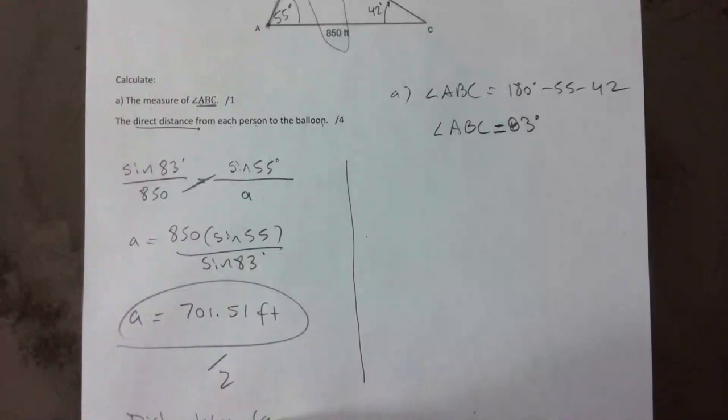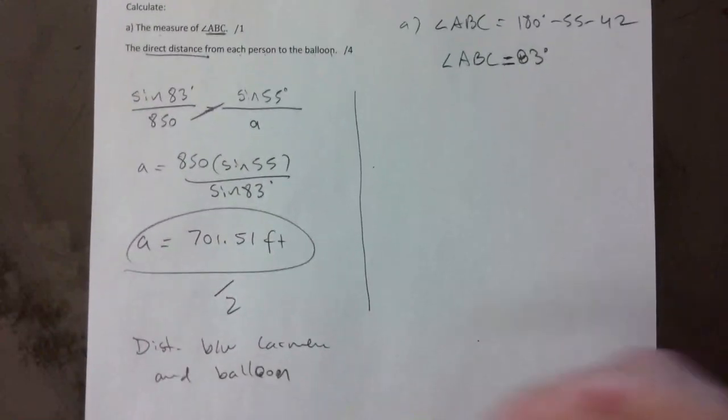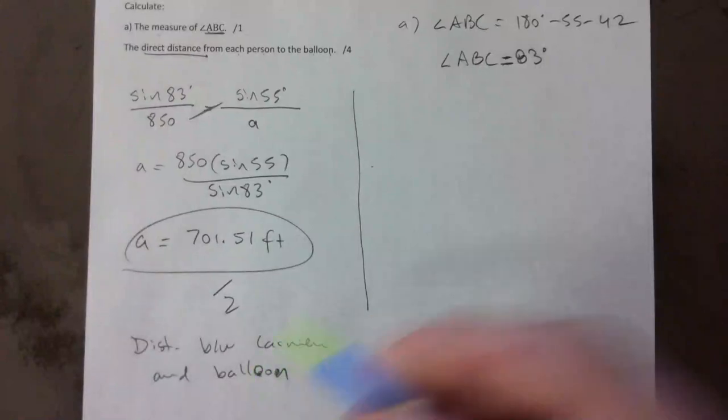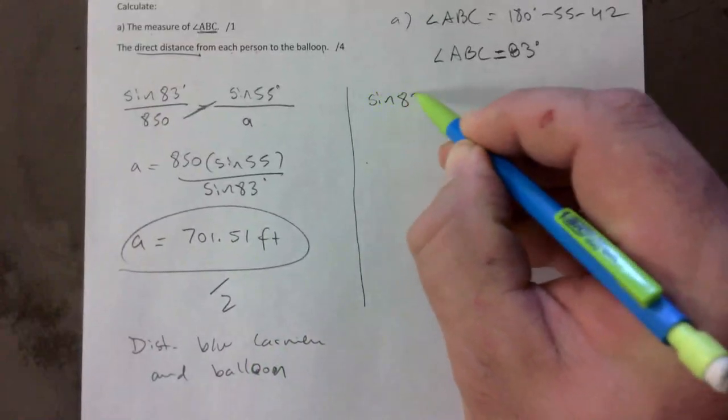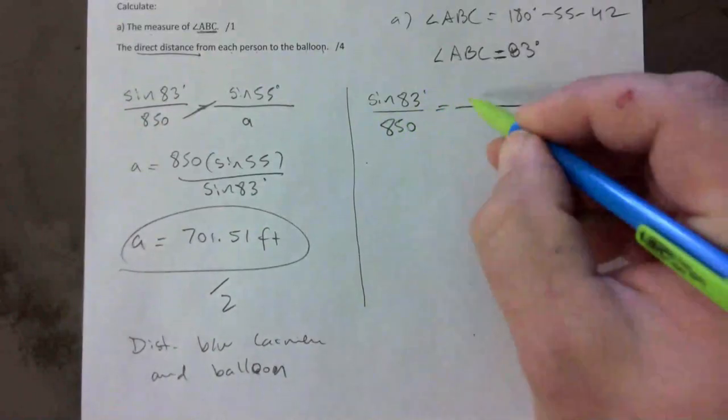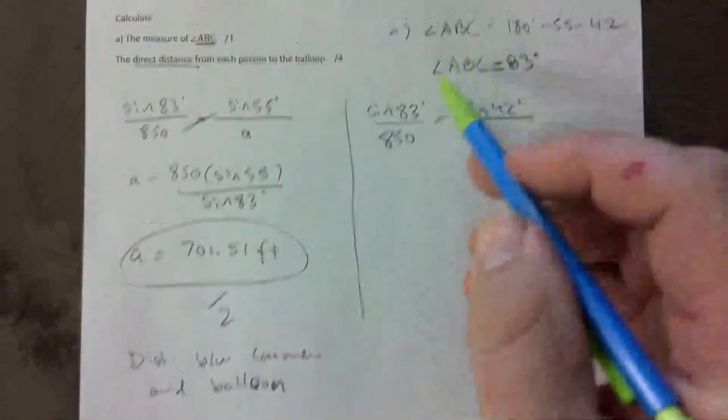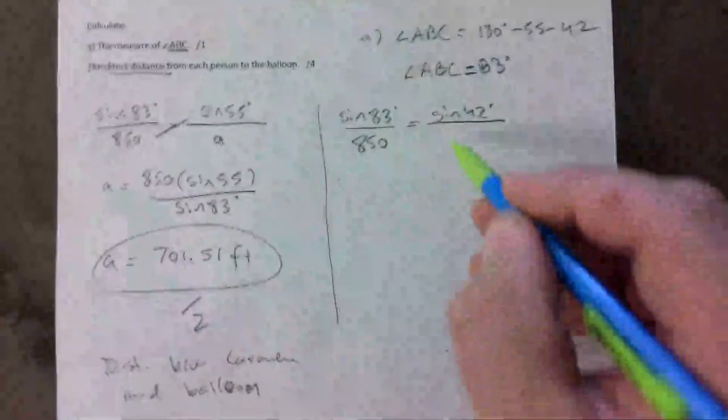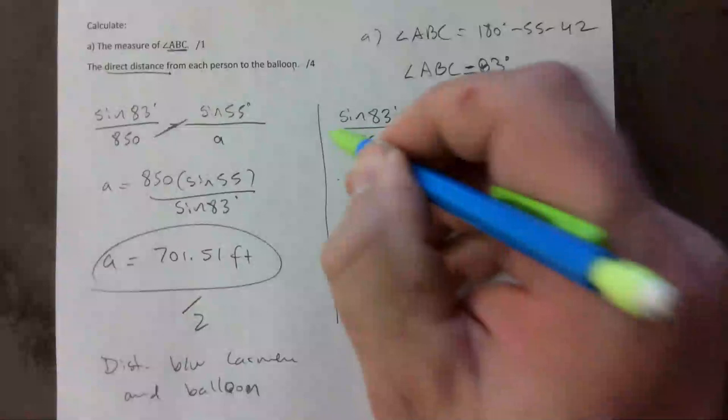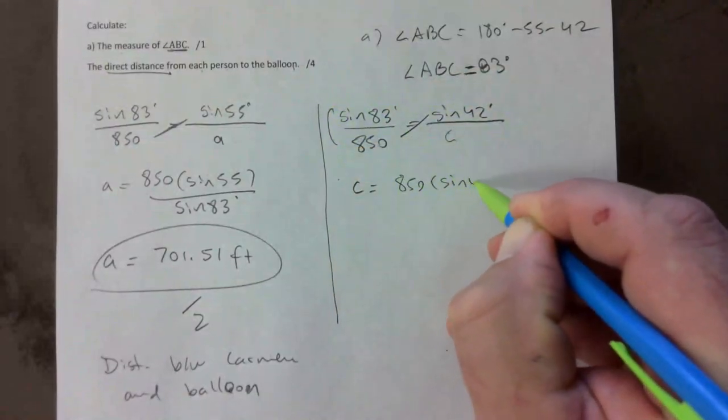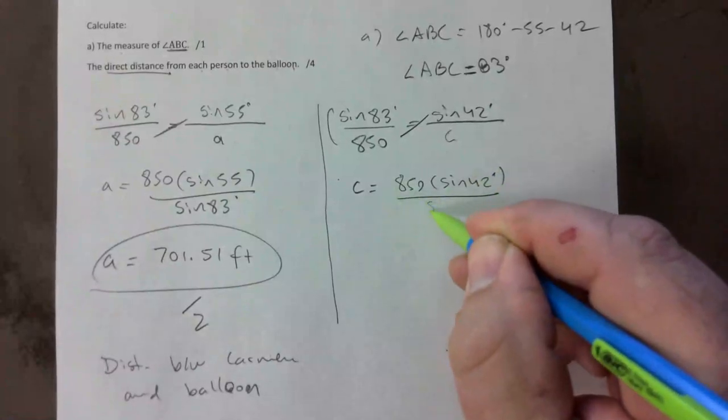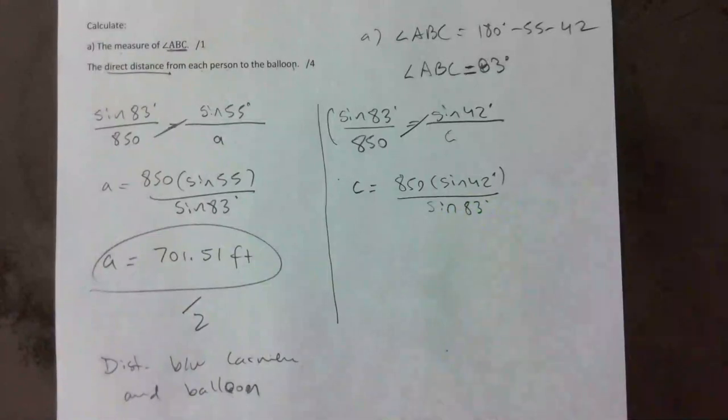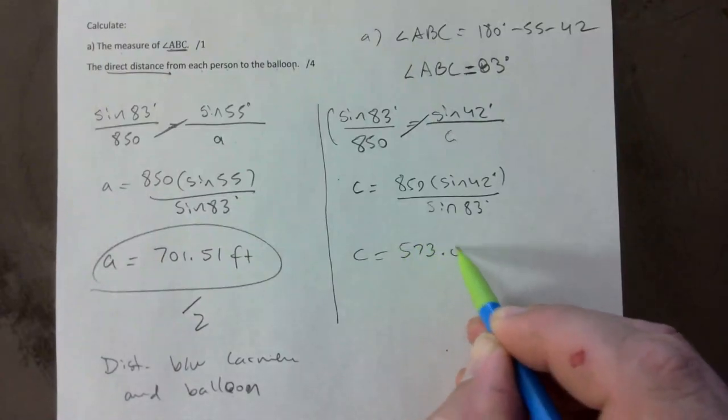For this would be, just to be clear, distance between Carmen and balloon. There you go, you can't see that but I just clearly saying that this distance between Carmen and the balloon. And then over on the other side I use the exact same pair, but this time I'm going to use sine of 42 degrees. This angle is going to allow me to solve for side c. That's 850 times sine of 42 divided by sine of 83. And side c is 573.03 feet.